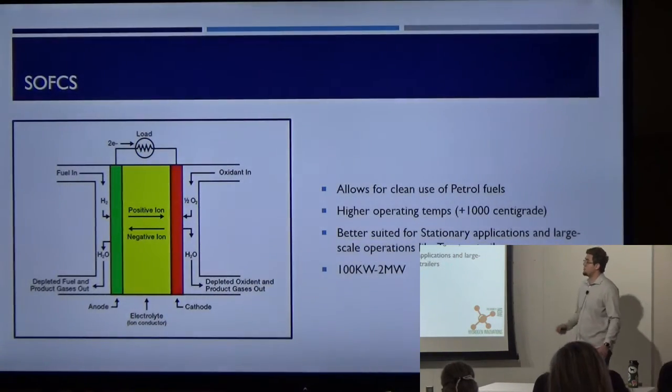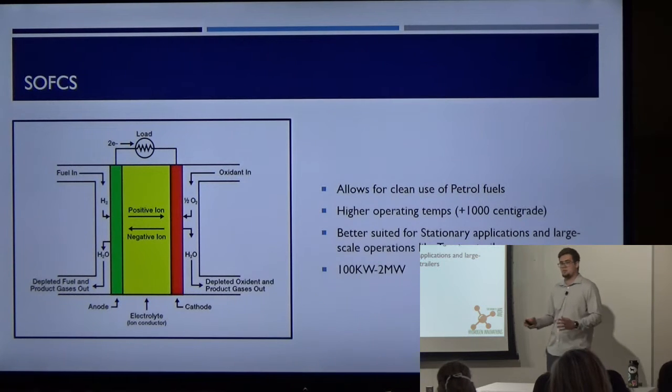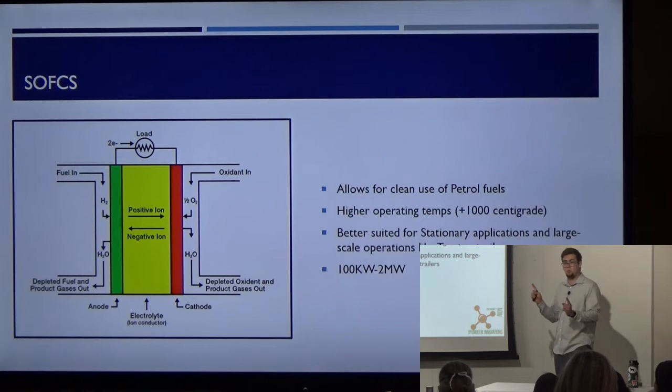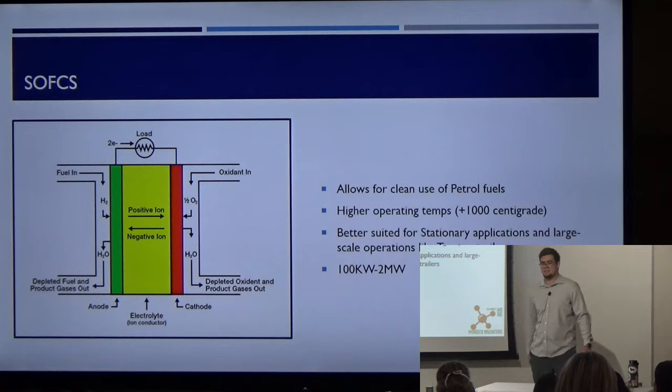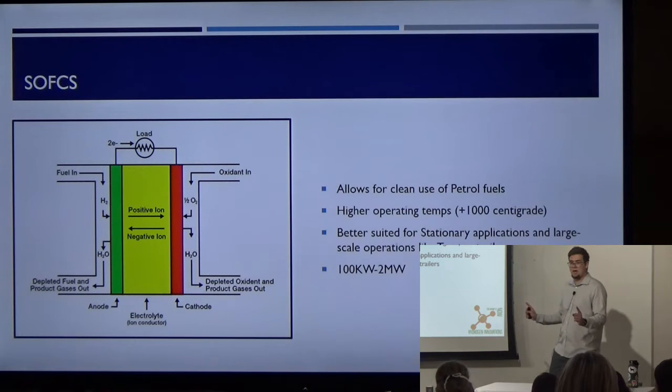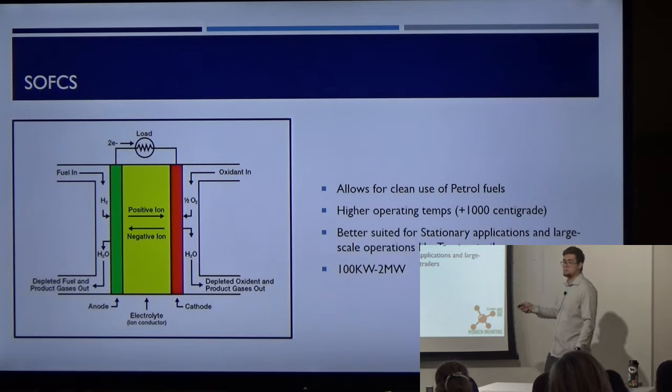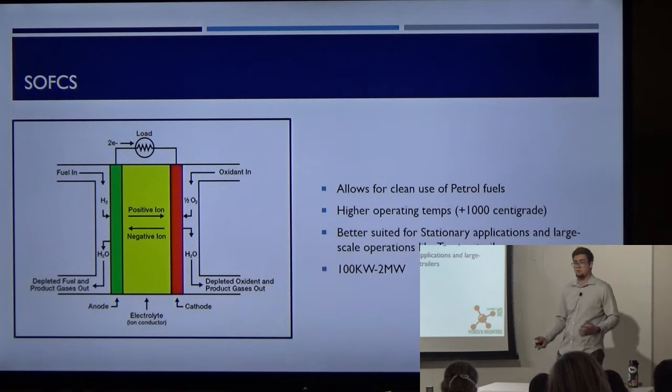Solid oxide fuel cells run on a similar principle of ionic transfer. Except they use a zirconium based ceramic for your ion transfer. This allows for the clean use of petroleum fuel. You'll put your fuel in, they'll strip the hydrogen off of it, transfer across your membrane, and rebond with the oxygen to create water. They can operate in excess of 1000 degrees centigrade. They are less beneficial to the environment. However, the amount of power they produce is immense. Basic ones can produce 100 kilowatts. The DOE, Department of Energy, says they can produce up to 2 megawatts in research. These are used for stationary applications like powering large city blocks. Or you can put them in something like a tractor trailer where you need a lot more power.